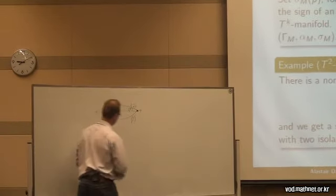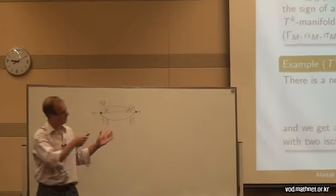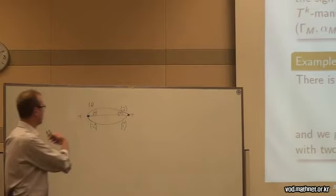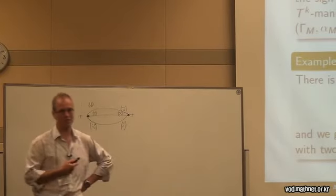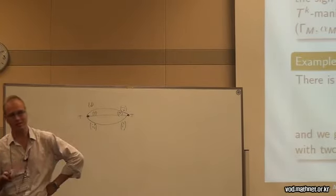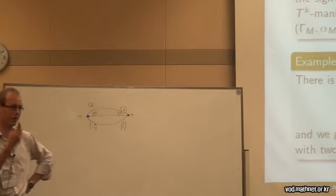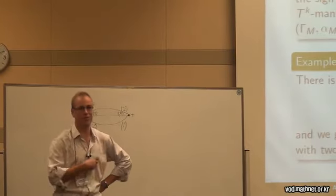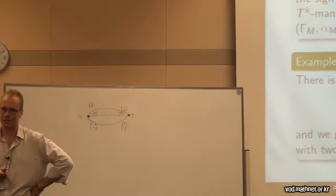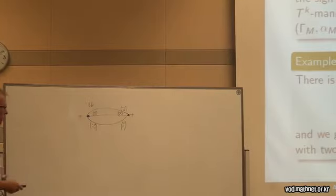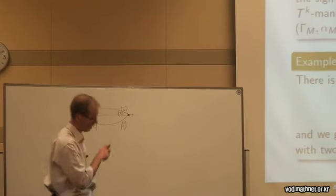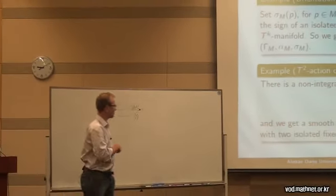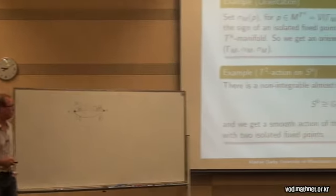Both vertices have sign plus one in this case because it's an almost complex structure. It's quite interesting — you can use combinatorial torics to see that this is actually the only torus-equivariant almost complex structure you can get on S6; you can't get one with a T3 action or an S1 action, as follows from the combinatorial torics and the definition of the GKM graph.